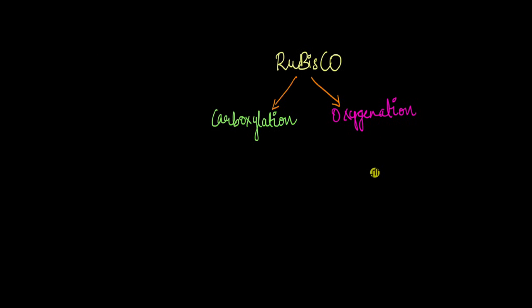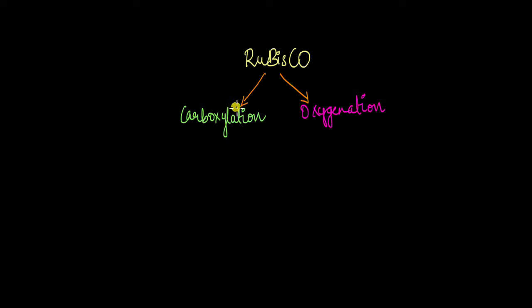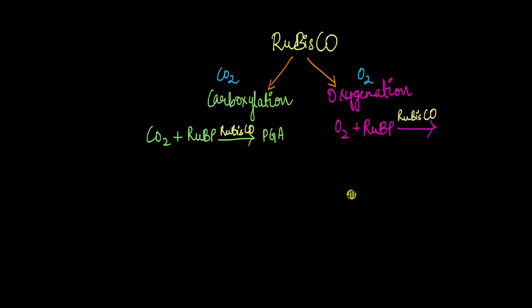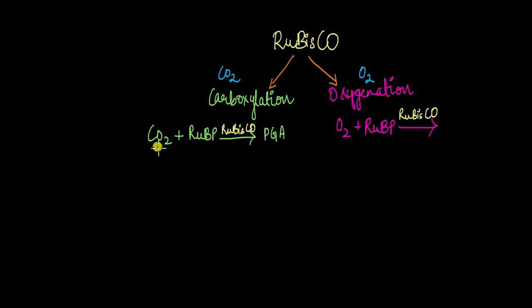Rubisco is capable of performing two different functions. When carbon dioxide binds to the enzyme, the process is known as carboxylation; when oxygen binds, the process is known as oxygenation. During carboxylation in the Calvin cycle, carbon dioxide and RuBP — ribulose bisphosphate — react in the presence of Rubisco to give PGA or phosphoglyceric acid. This PGA is then converted to G3P, which is used to produce glucose.